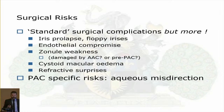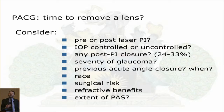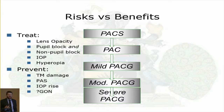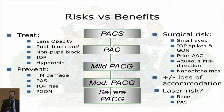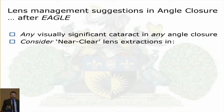Considerations when deciding whether to follow the EGLE trial include: whether the patient has already had an iridotomy, whether IOP is controlled, how much post-iridotomy closure remains, severity of glaucoma, and surgical risk. Going forward, we will take out almost any visually significant cataract in any angle closure disease, and consider clear or near-clear lens extraction as primary intervention in anyone with angle closure glaucoma.